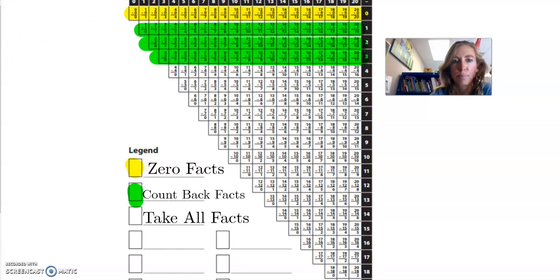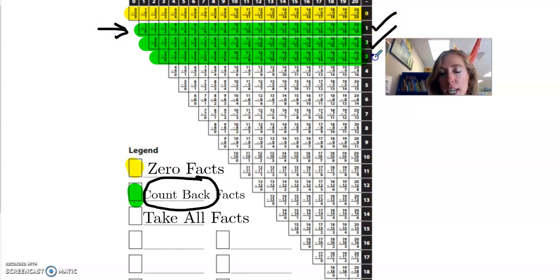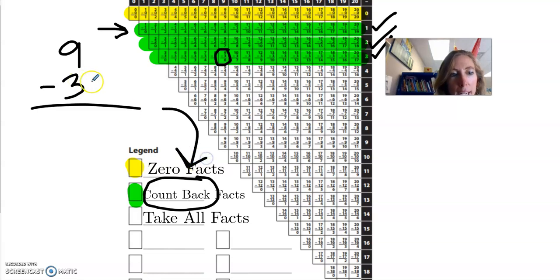Let's check out some other facts. Now we have the count back facts. Notice in this one, we are counting back just one, then we're counting back two and we're counting back three. So if we see a subtraction like this one, nine, and then we see we're subtracting three, what can we do to figure that out? We could just count back because three is not that many to count back. So if we're at nine, then we'd count backwards because we're subtracting and go eight, seven, six. And cha-ching, we have our difference is six. Awesome.